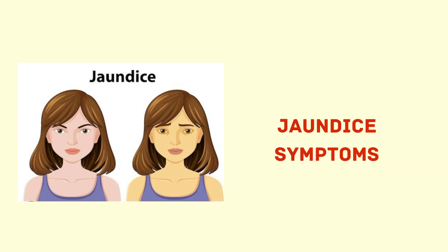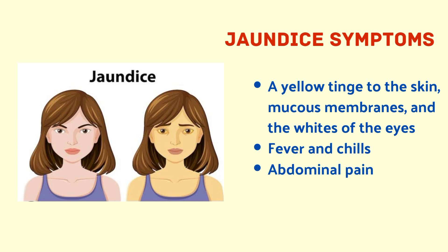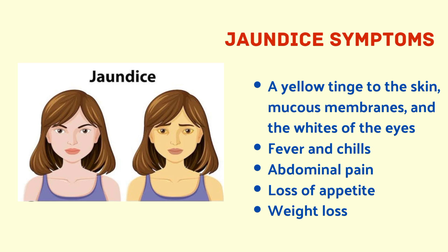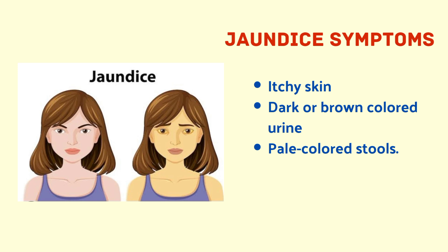Now let us see the symptoms of jaundice: a yellow tinge to the skin, mucous membranes, and the whites of the eyes; fever and chills; abdominal pain; loss of appetite; weight loss; itchy skin; dark or brown colored urine; pale colored stools; being tired or confused; and flu-like symptoms.